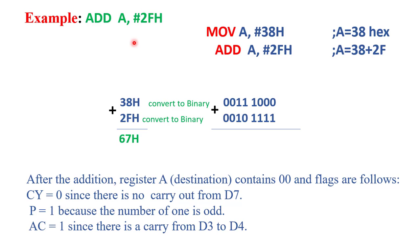Now with another example, I will explain how the Carry Flag, Parity Flag, and Auxiliary Carry Flag get affected. The instruction is: ADD A, #2FH. In this instruction, we perform addition between the accumulator content and the immediate data 2FH. First we load the accumulator using MOV A, #38H, so the accumulator is loaded with 38H. We then convert the hexadecimal numbers into binary and perform the addition.